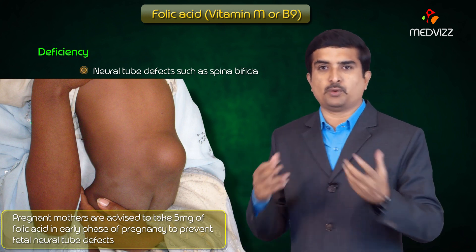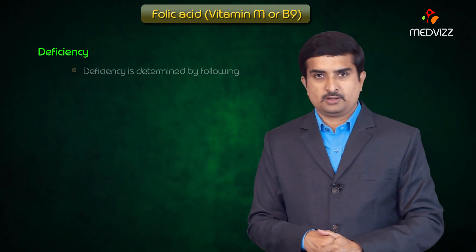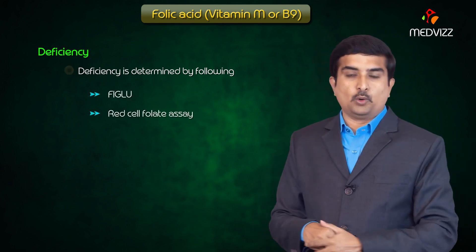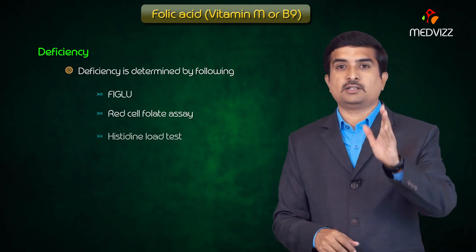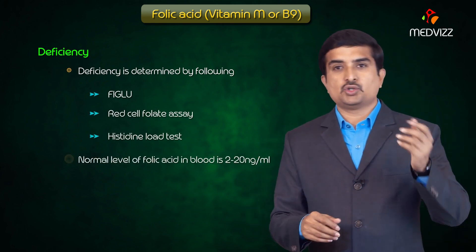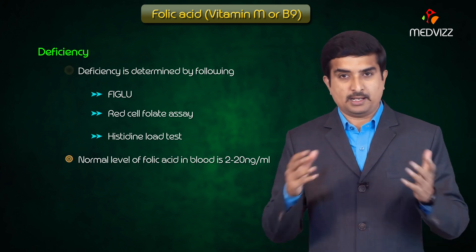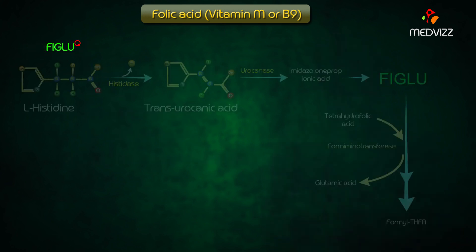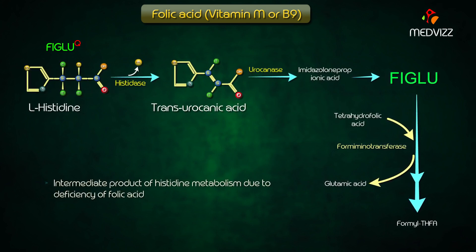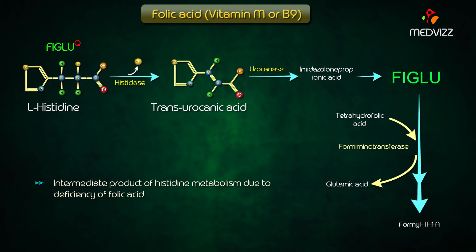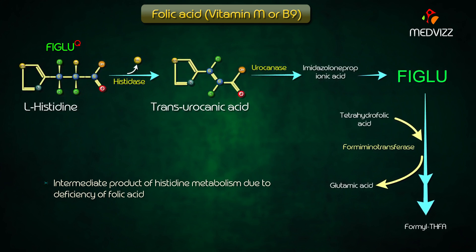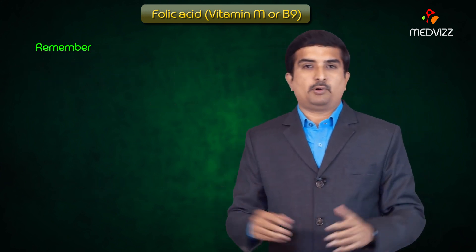Folic acid deficiency is determined by the FIGLU test, red cell folate assessment, and the histidine load test. Normal levels of folic acid in the blood are 2 to 20 nanograms per ml. FIGLU is an intermediate product of histidine metabolism that accumulates due to folic acid deficiency, making the histidine load test useful for assessing this deficiency.